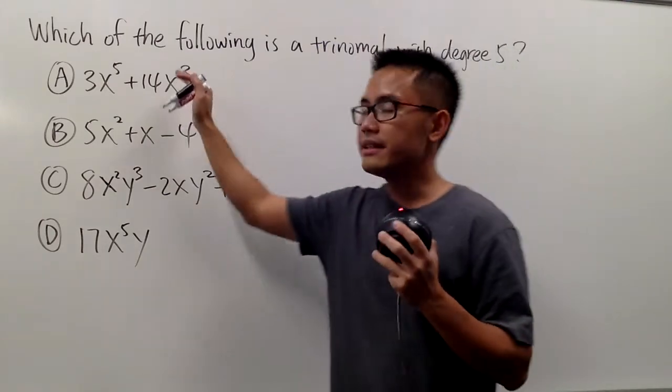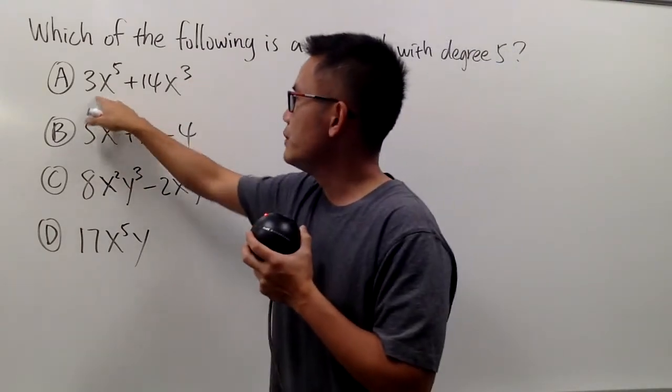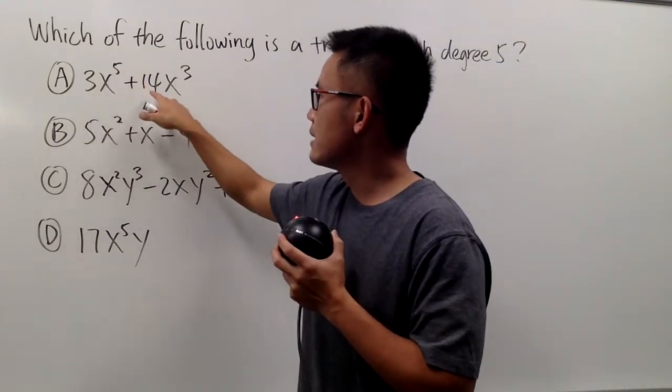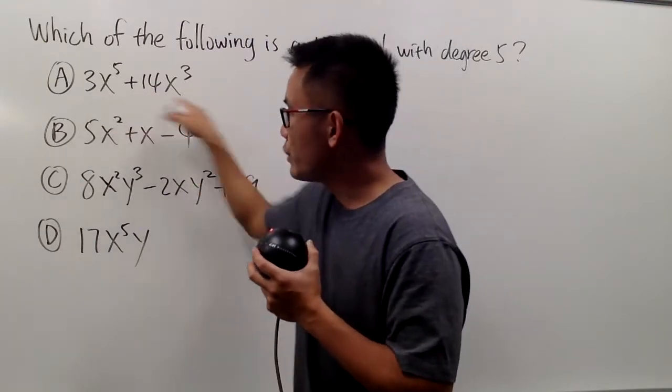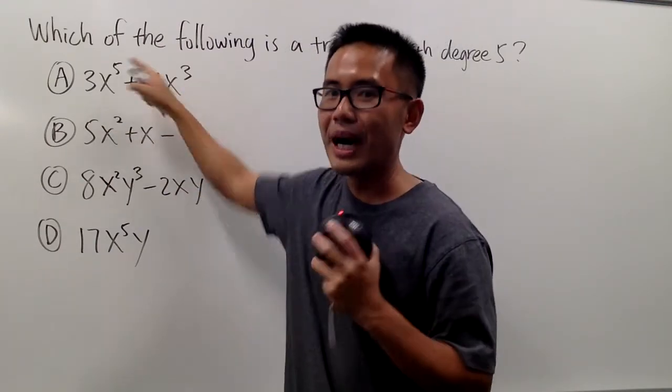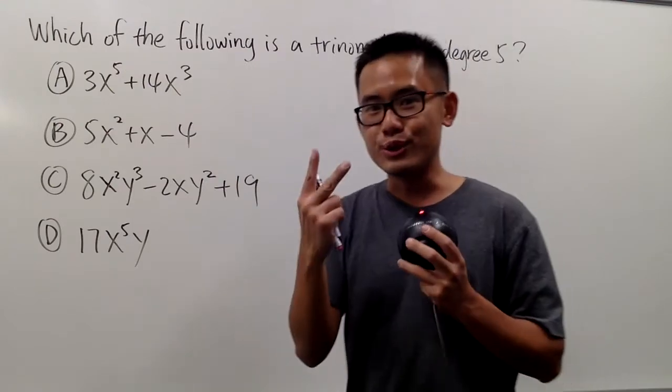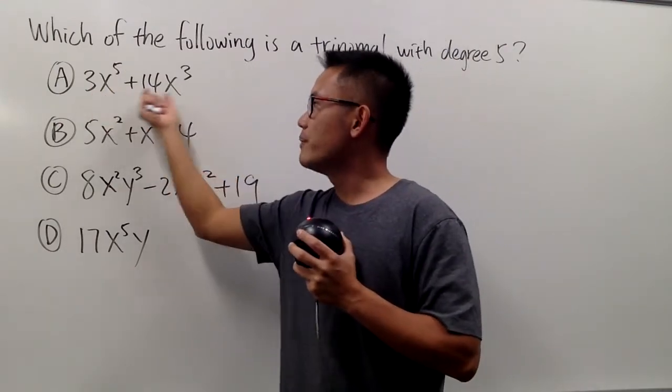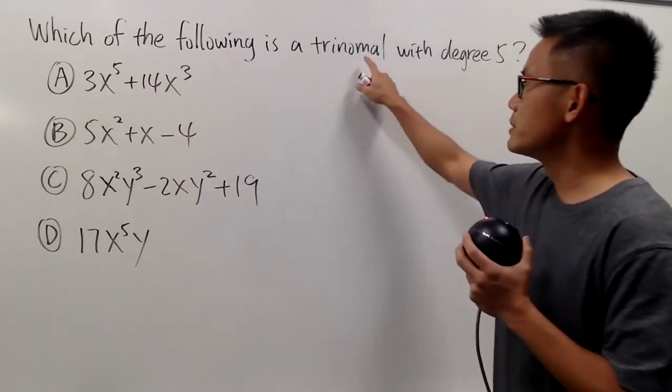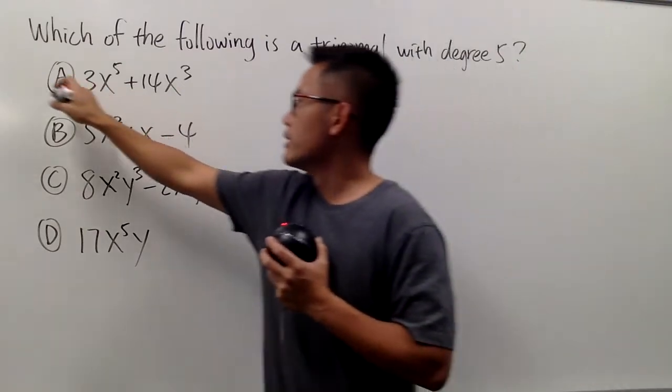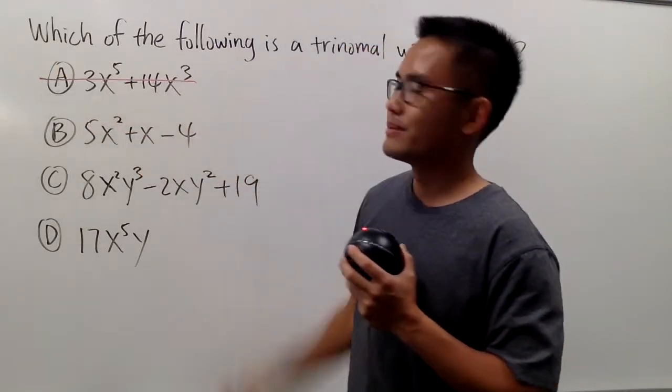Let's examine the first one here. We have 3x to the fifth power plus 14x to the third power. The degree right here is 5, that's okay, but how many terms do we have? Just two terms. This is the first term, that's the second term. We must have three terms for a trinomial, so this right here is not an answer to this.